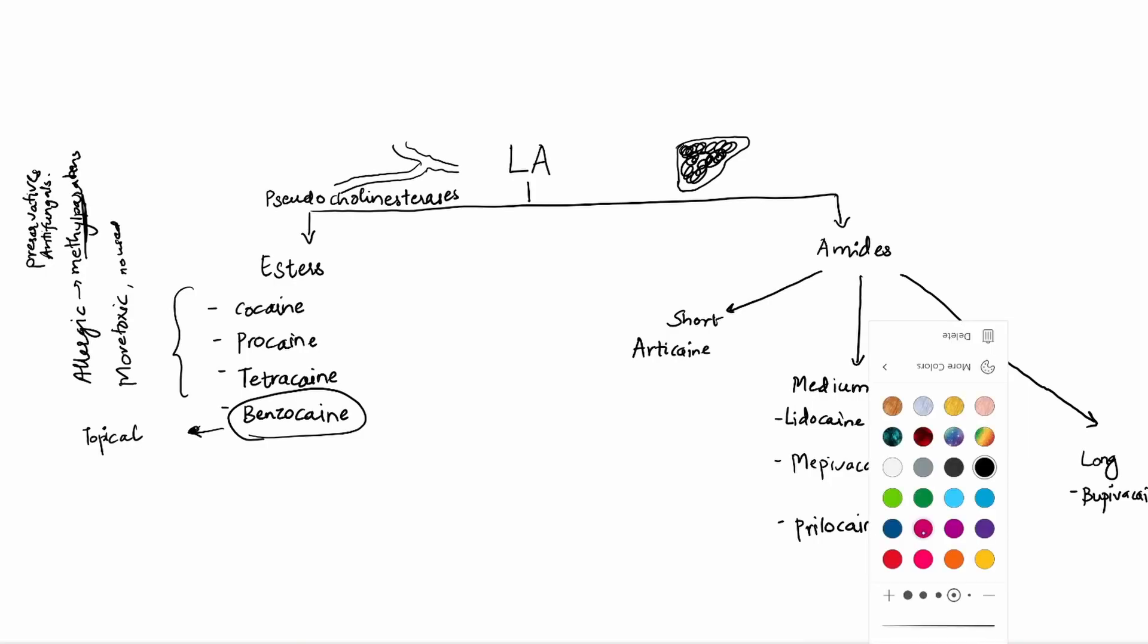Now I'm going to tell you the trade names for these ones. Articane is also called as septocaine. Lidocaine is also called as xylocaine, which we commonly use. Mepivacaine has two. One is carbocaine and then the other is polocaine. And prilocaine comes in one more, which is citanest.